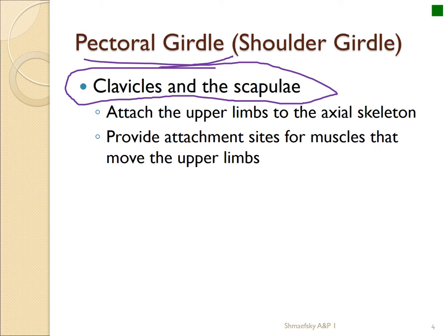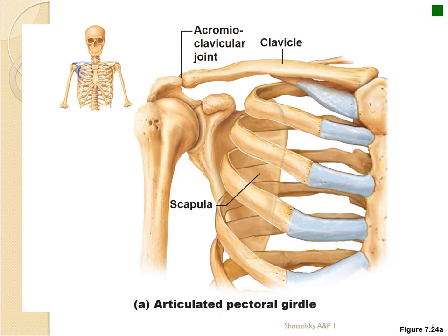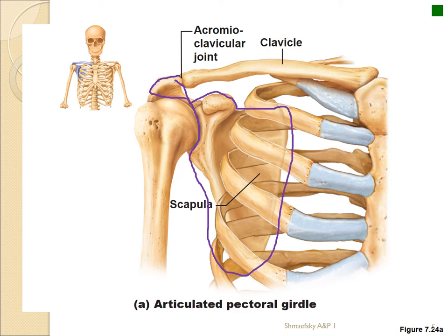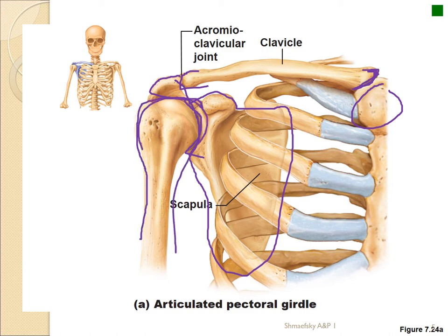Looking at a close-up of the pectoral girdle, there's your scapula. Right here is what we call the coracoid process, which means "the crow" — it looks like a crow's head. There's your acromium area, a very important landmark for the clavicle where it comes together with the pectoral girdle. The pectoral girdle is held in place by the clavicle attaching to the manubrium. And then there's the glenoid fossa, which attaches the pectoral girdle to the humerus to make your upper appendage.